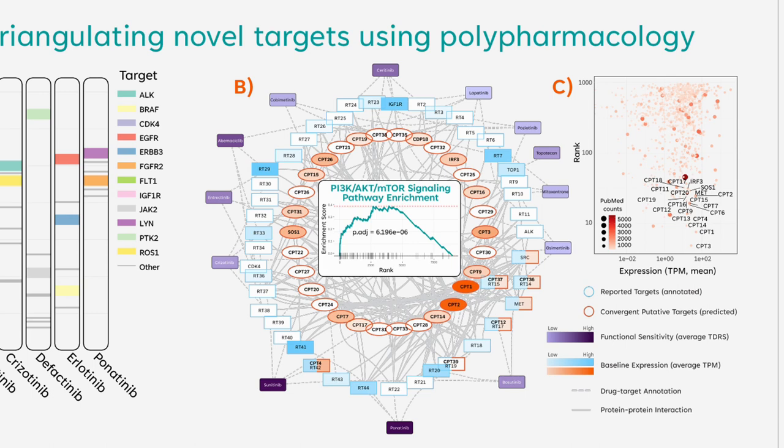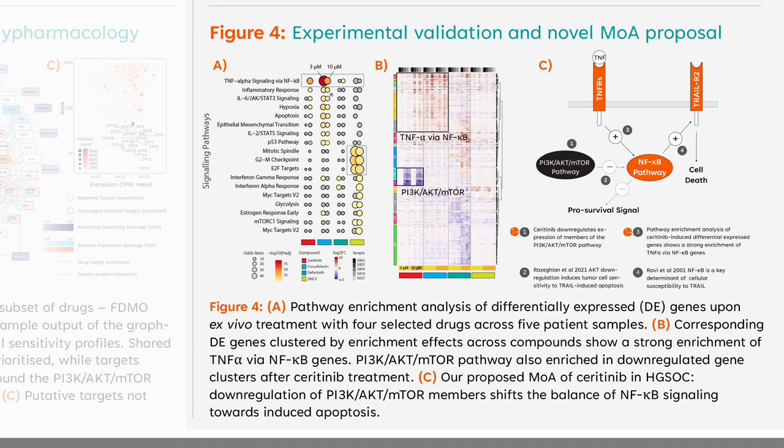Despite the associations to various biological processes of drugs within the panel, we observed a strong enrichment of the PI3K, AKT, and mTOR pathway among convergent putative targets. Moreover, using PubMed count as a proxy, we observed no correlation between the target ranks and their popularity as seen in Figure 3c. This confirmed that our methodology is not biased towards network hubs or more studied proteins, which therefore indicates their first-in-class potential.